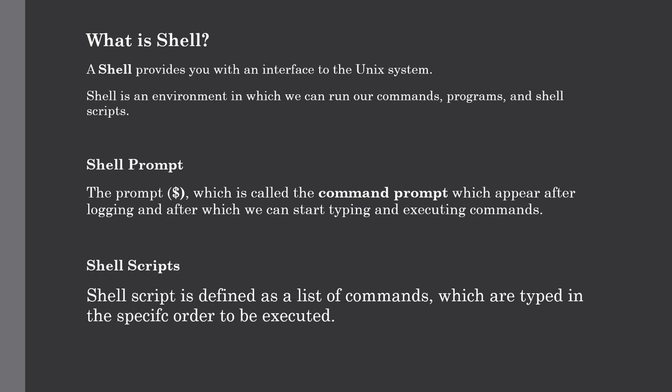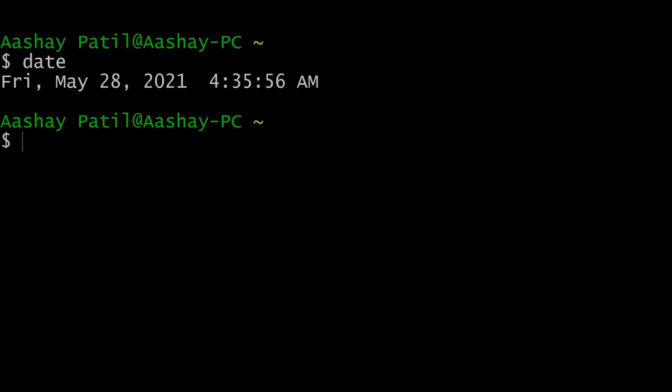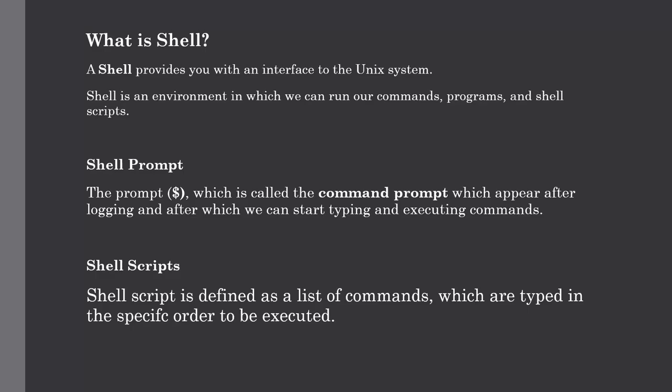Our next topic is the shell prompt. The prompt displayed by the dollar symbol is called the command prompt, which is issued by the shell. While the prompt is displayed, we can type any command and execute it. Shell reads our input after we press Enter and determines the command to execute by looking at the first word. As you can see, this is our command prompt. Let me execute the date command — after hitting Enter it gives us the current date and timestamp.